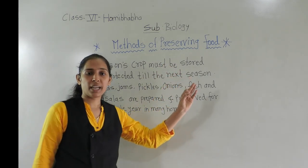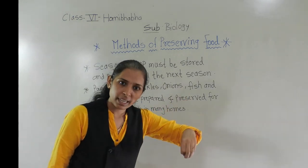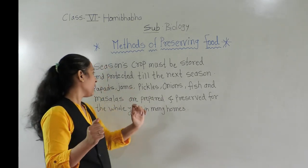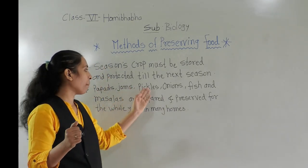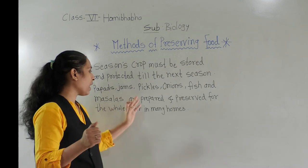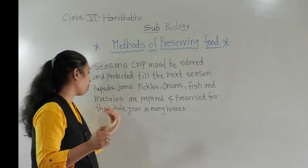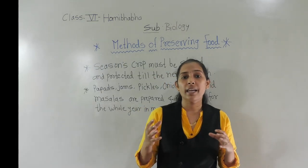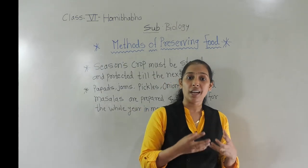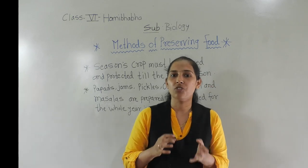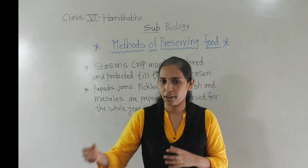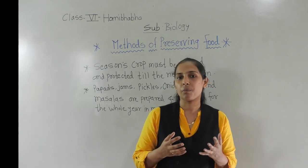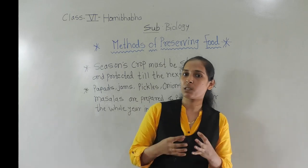For example, we discussed about rice — rice is harvested in the rainy season and must be stored properly until the next rainy season. Similarly, jams, pickles, and masalas are prepared and preserved. Vegetables and other produce are also dried and kept properly so they can be used for a long period of time. We will discuss the different methods of preservation in our next session.